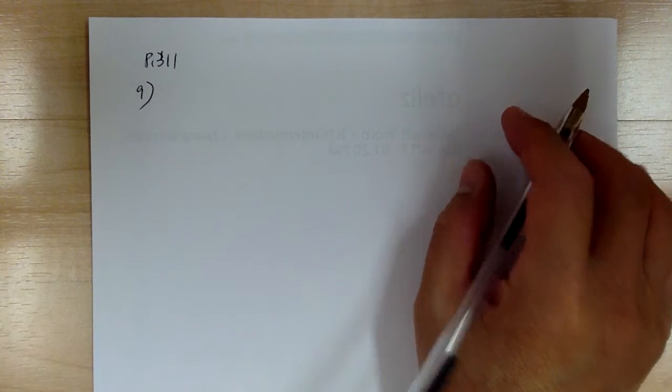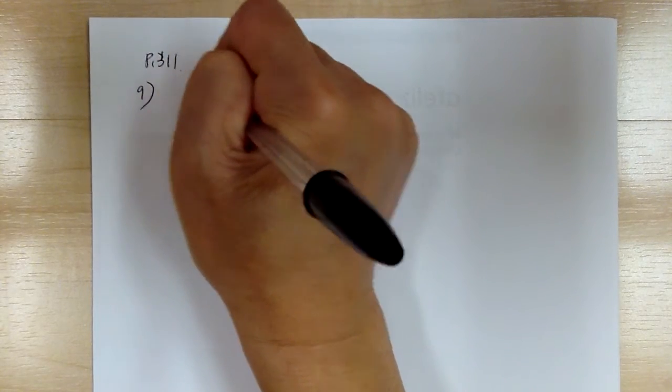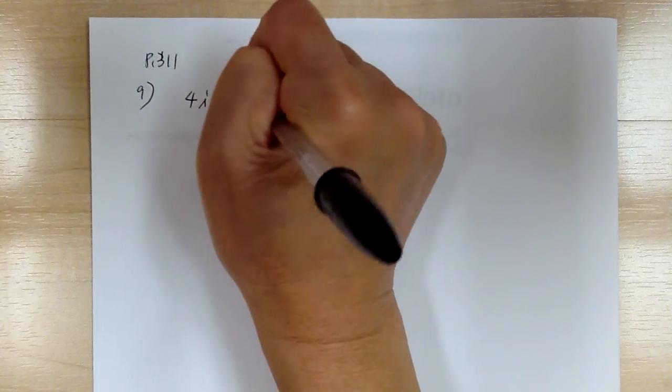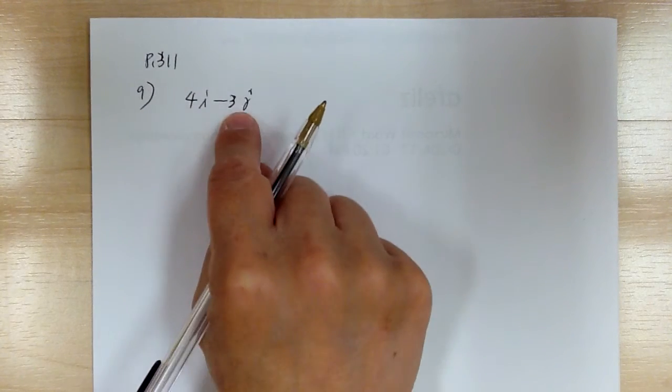Open your book to page 311 and let's go to number 9. Number 9, you have vector is equal to 4i minus 3j, and you're looking for unit vector with this direction.